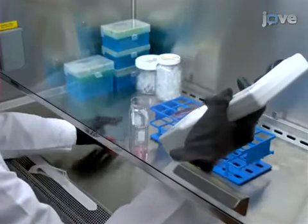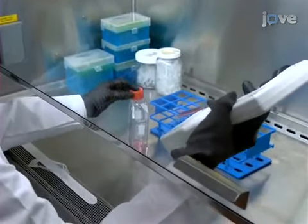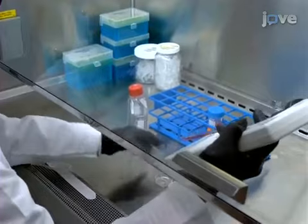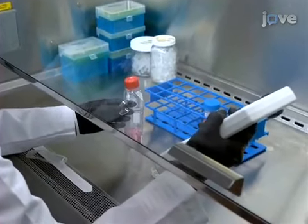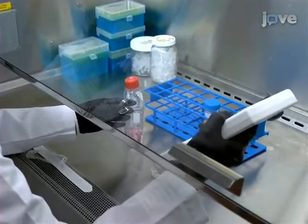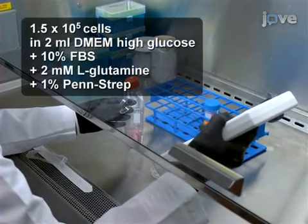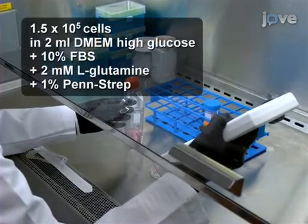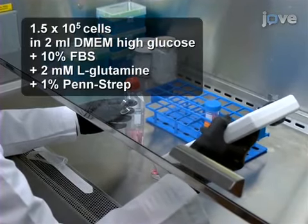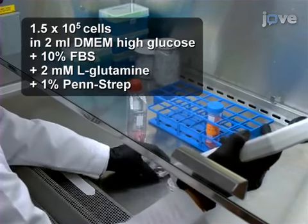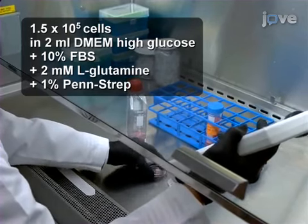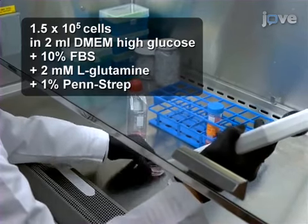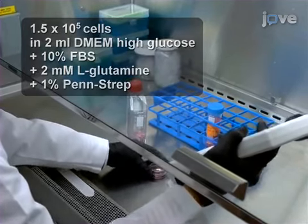To begin the procedure for transcriptional silencing of acid sphingomyelinase, or ASM, seed HeLa cells in DMEM growth media on 35mm glass bottom dishes. Incubate overnight at 37 degrees Celsius.